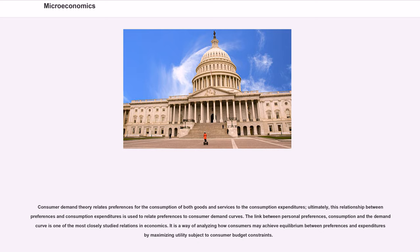Consumer demand theory relates preferences for the consumption of both goods and services to the consumption expenditures. Ultimately, this relationship between preferences and consumption expenditures is used to relate preferences to consumer demand curves. The link between personal preferences, consumption, and the demand curve is one of the most closely studied relations in economics. It is a way of analyzing how consumers may achieve equilibrium between preferences and expenditures by maximizing utility subject to consumer budget constraints.